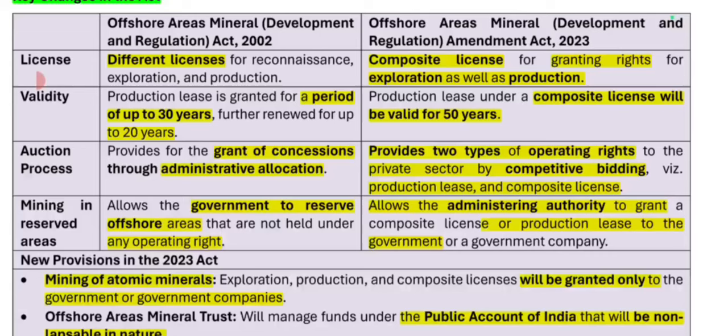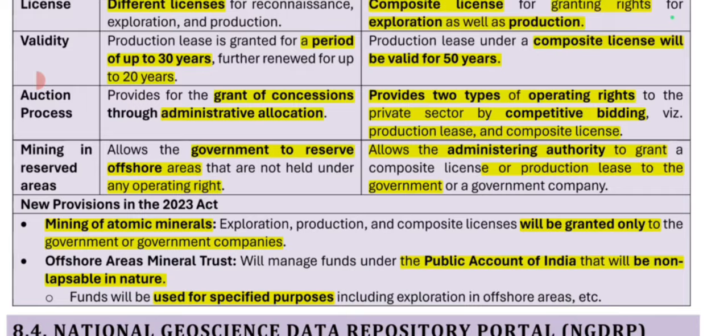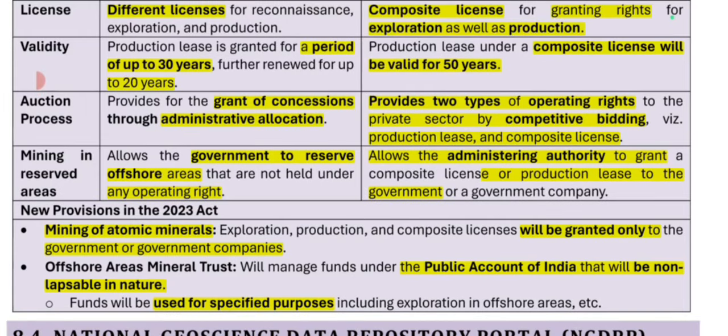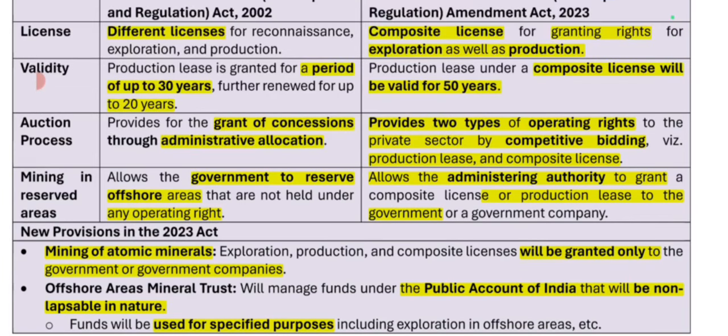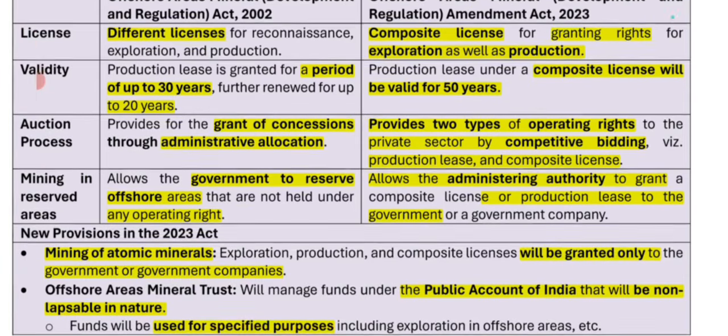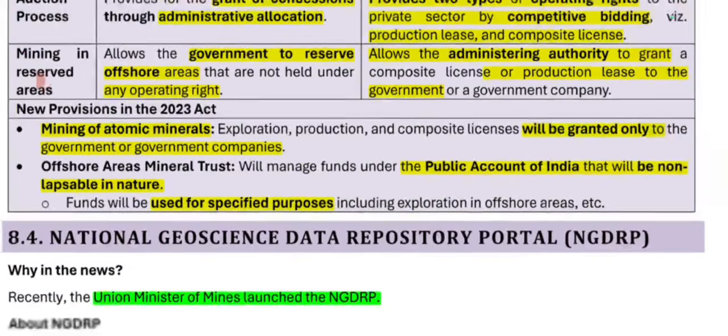Previously, production leases were for 30 years and 20 years, but the new composite license is valid for 50 years with no extension. Regarding the auction process: the 2002 Act provided for the grant of concessions through administrative allocation. Under the 2023 Act, there are two types: operating rights granted to the private sector by competitive bidding, and production lease and composite license granted to the government, allowing the government to reserve offshore areas not held under any operating right.